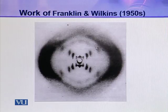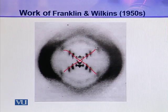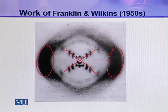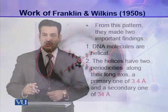In this picture, you can see this cross of spots. This cross of spots indicates that the DNA fiber is helical in nature. And these two bands on the left and right side of this picture show the recurring bases in the polynucleotide chain. From this pattern,